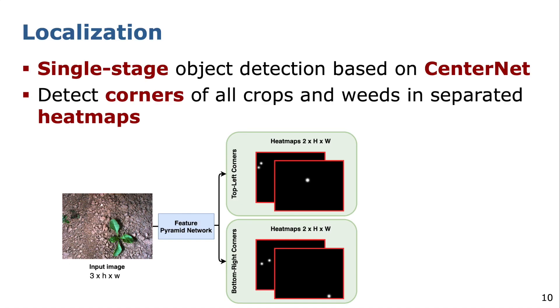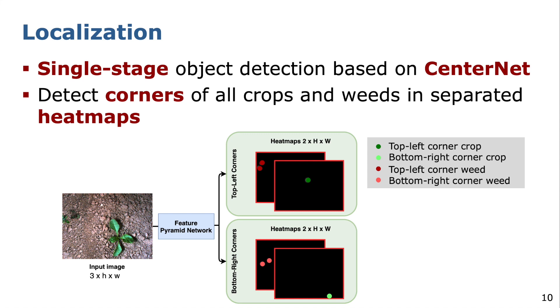First, I want to present our approach to localize crops and weeds in the field. For the task of object detection, we use a deep neural network based on the recently proposed CenterNet, which predicts the bounding box of an object by estimating the location of its top-left and bottom-right corners. This is a single-stage model which feeds the input image to a feature pyramid network and predicts two heat maps — one for the location of all top-left corners and another for all bottom-right corners. Each heat map consists of two channels encoding crops and weeds separately.